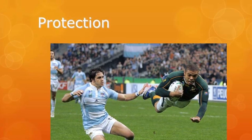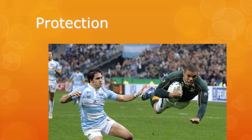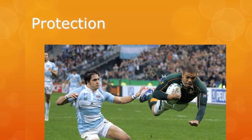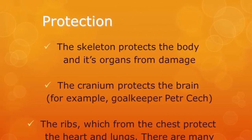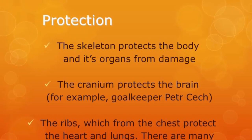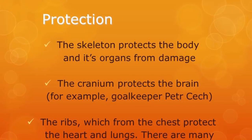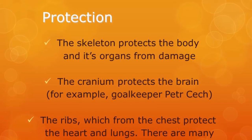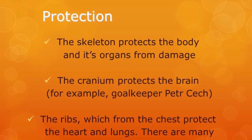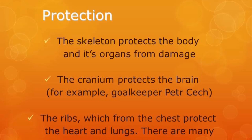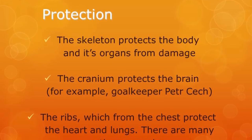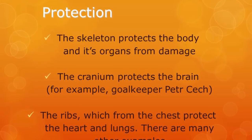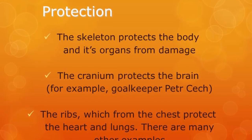Finally, we have protection. The skeleton can protect vital organs from damage. The cranium protects the brain, and the ribs protect the chest organs — your heart and your lungs. There are obviously other examples too.